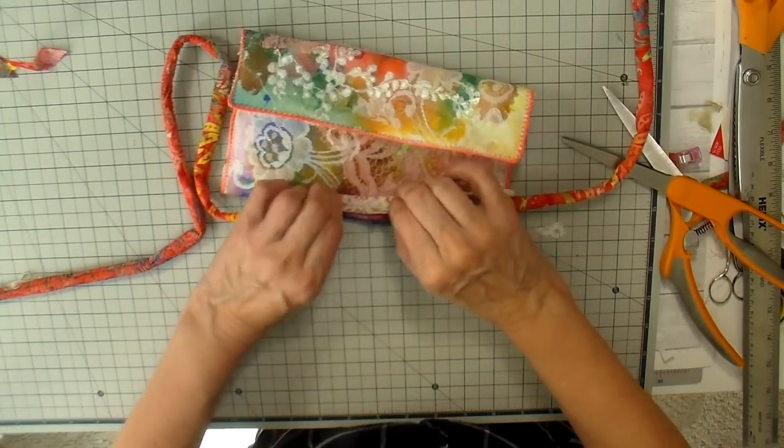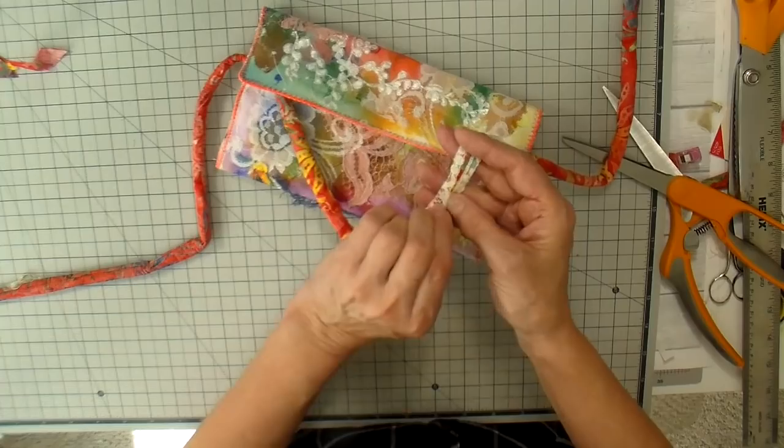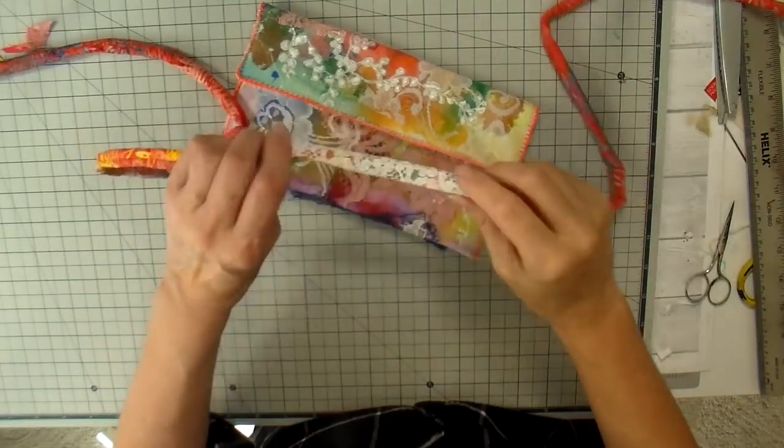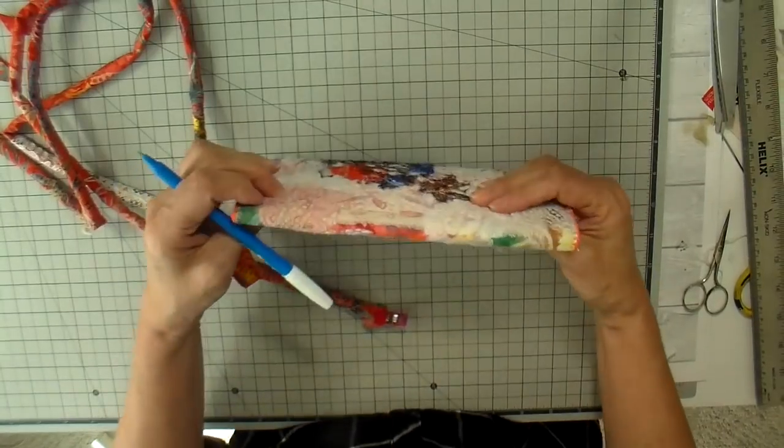And then I decided to cover that seam with a piece of lace. There's a lot of lace on this bag and I thought it would just really add a nice touch, and I just hand stitched that on.